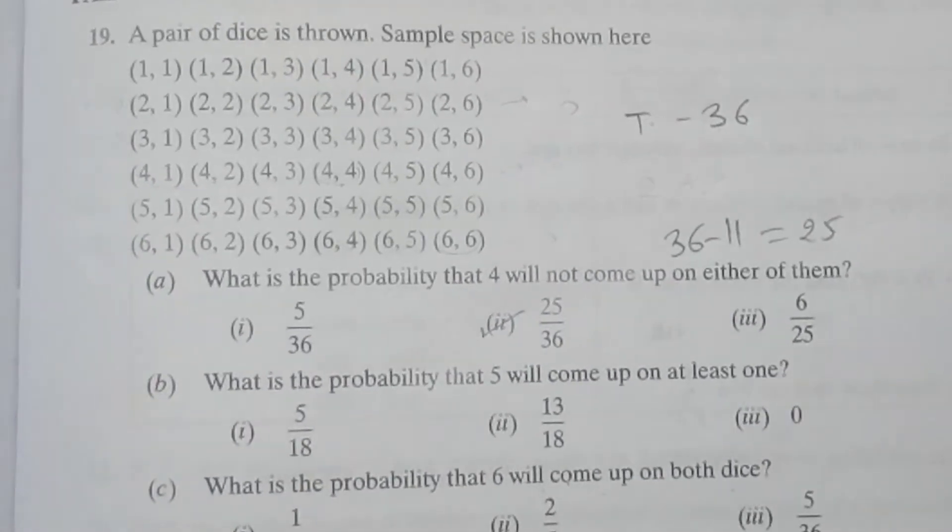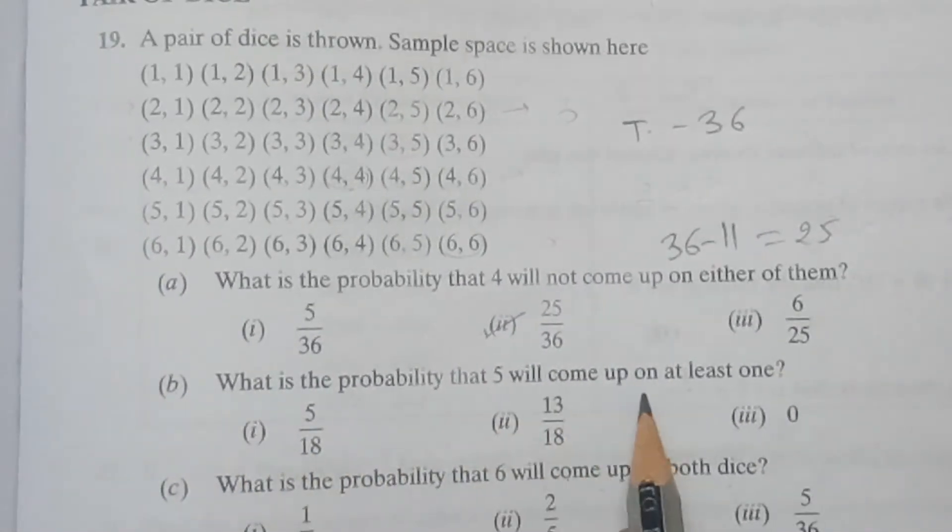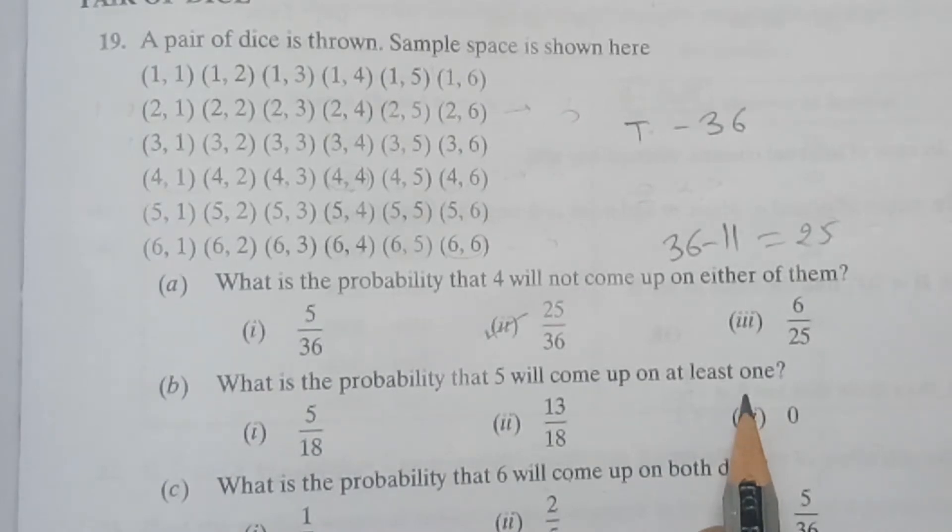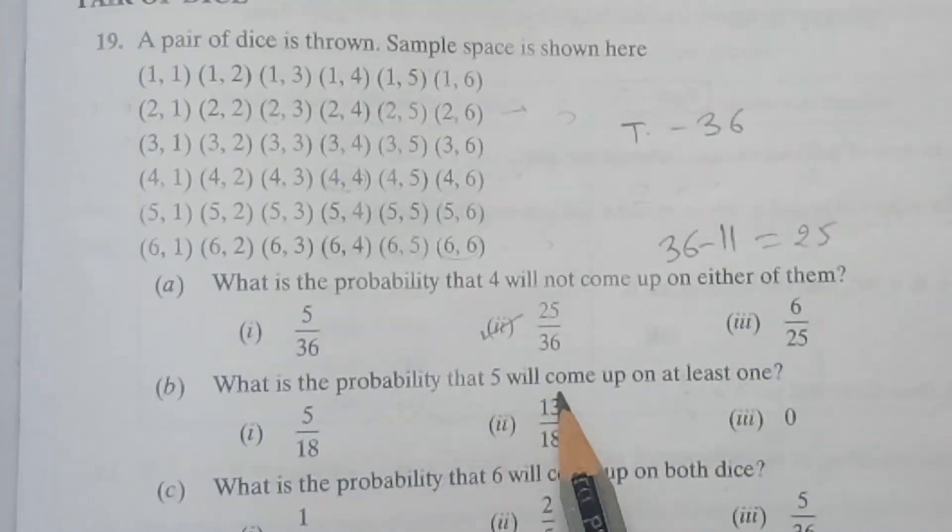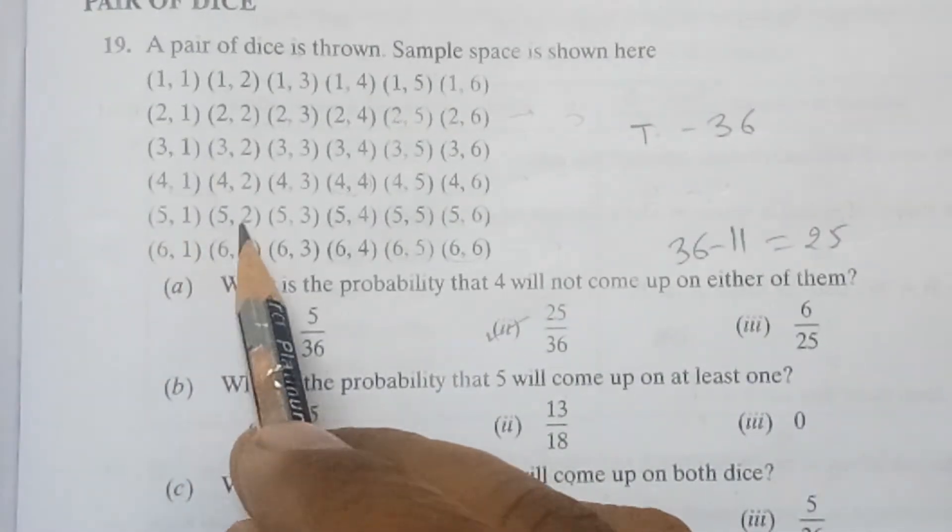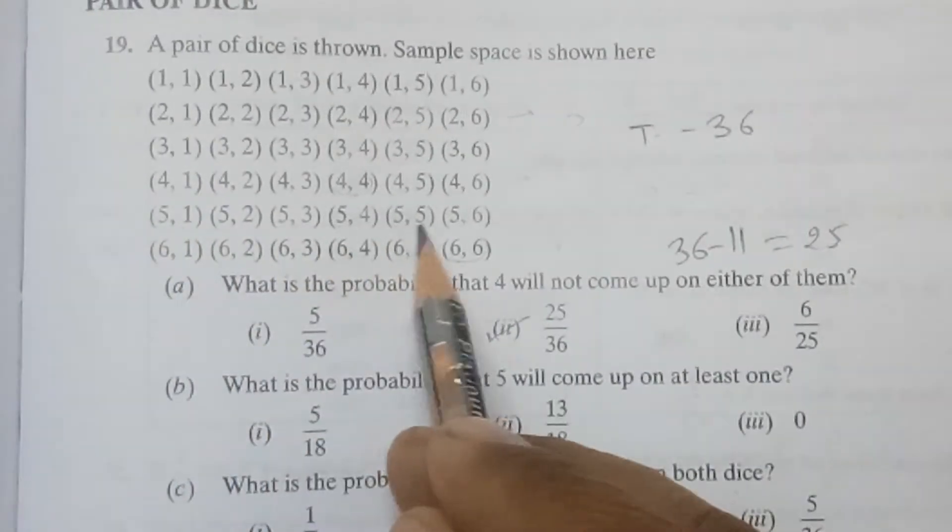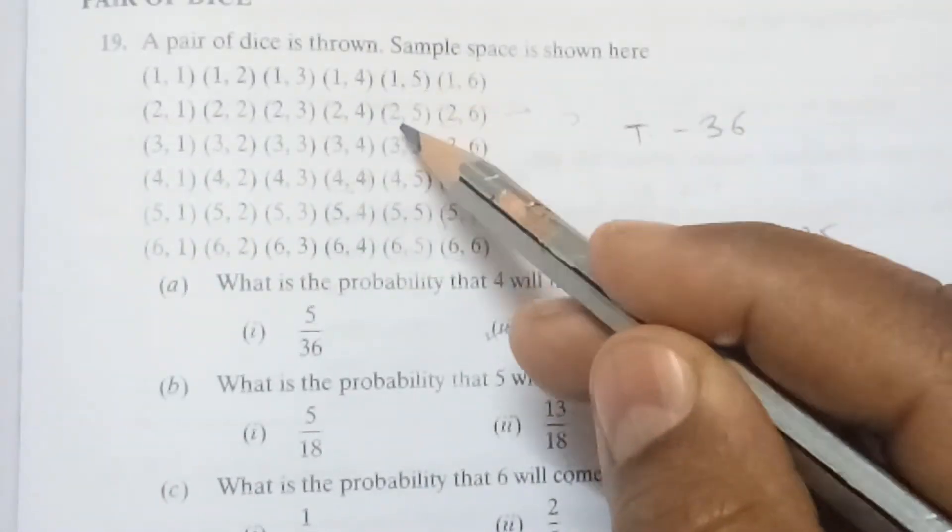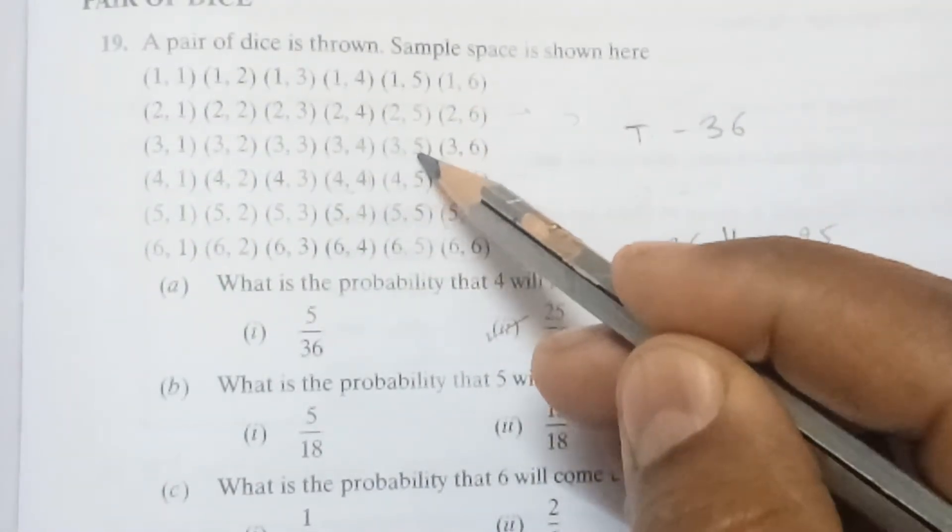Next is: What is the probability that 5 will come at least once? So same, we need to check that 5 will come one or more times. So here you can see: (5,1), (5,2), (5,3), (5,4), (5,5), (5,6) and here (1,5), (2,5), (3,5)...